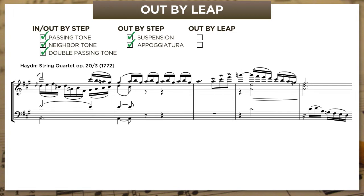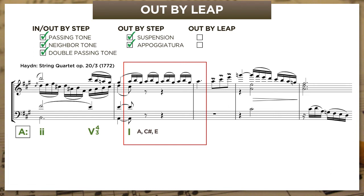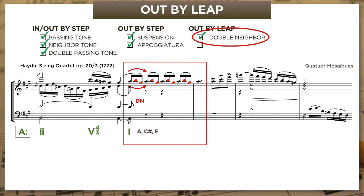Here's a passage from one of Haydn's groundbreaking Op. 20 string quartets, focusing on the bar where the first violin plays a mini-cadenza with an implied tonic harmony. The only chord tone is A-natural; everything else is non-chordal. The non-chord tones are arranged in pairs: between every A-natural, we get both the upper neighbor B and the lower neighbor G-sharp. This is called a double-neighbor figure, allowing us to leap from B into G-sharp because the ear can hear both resolving into the A they surround.